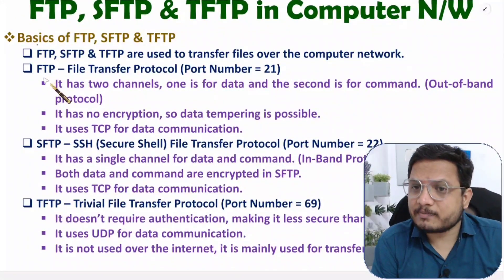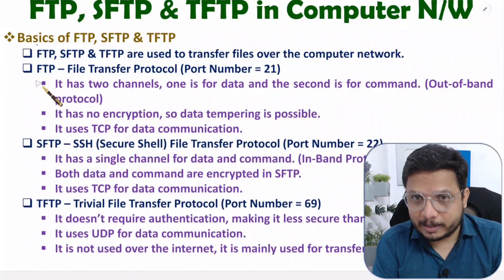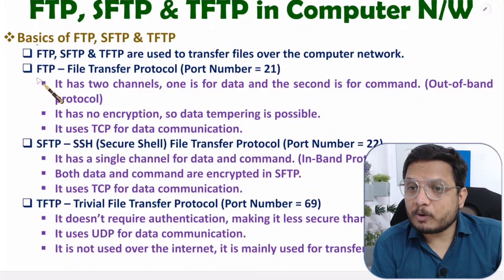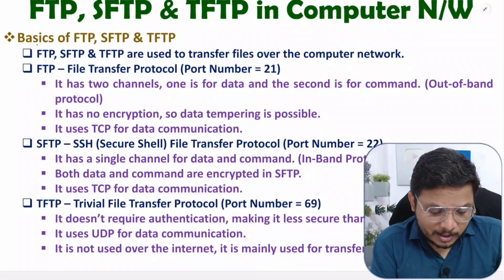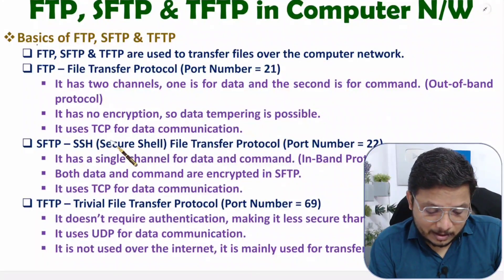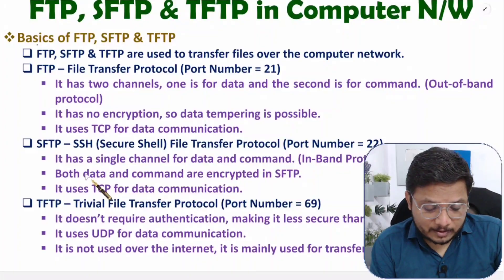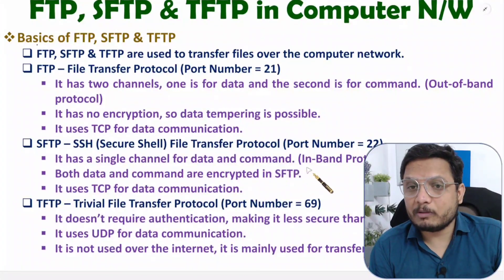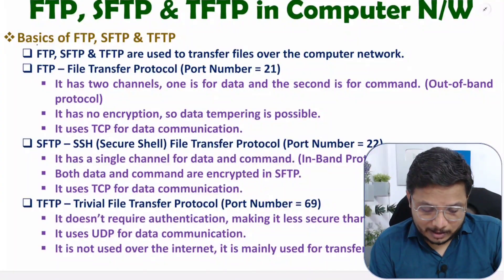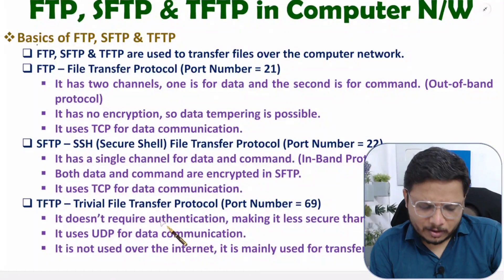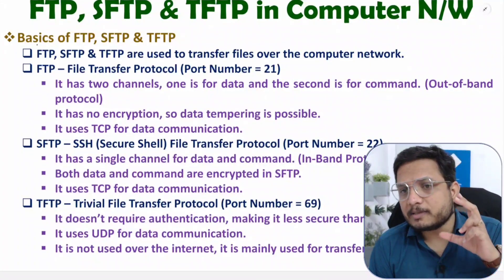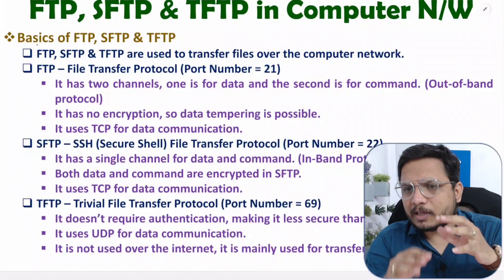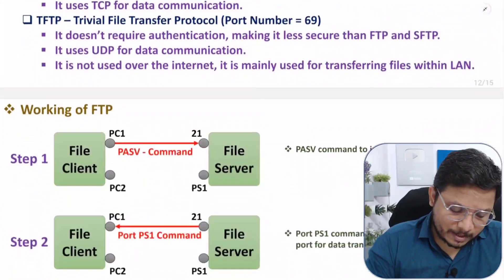To summarize: FTP port is 21, SFTP port is 22, and TFTP port is 69. FTP is out-of-band with separate channels for command and data, no encryption, and uses TCP. SFTP is in-band with a single channel, both data and commands are encrypted, and also uses TCP. TFTP requires no authentication making it less secure, uses UDP, and is used within LAN only — not over the internet.